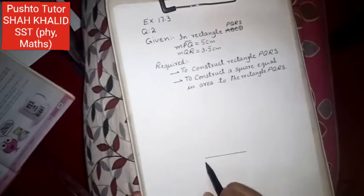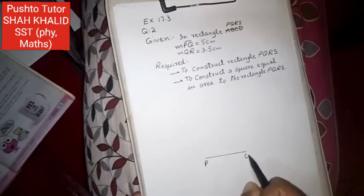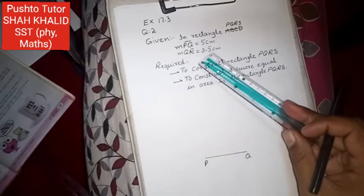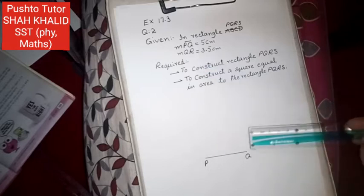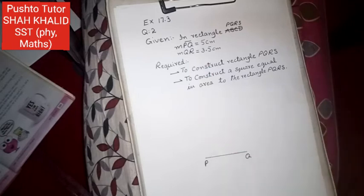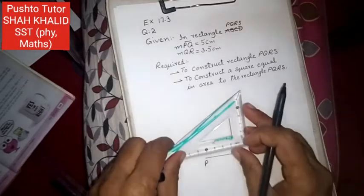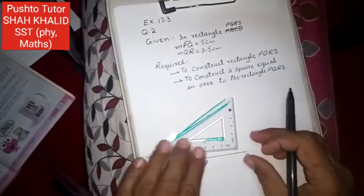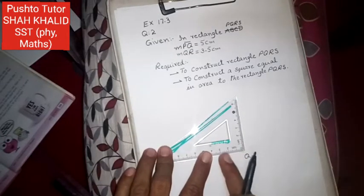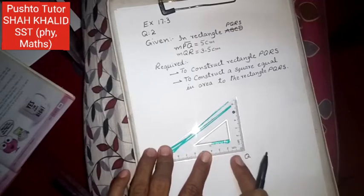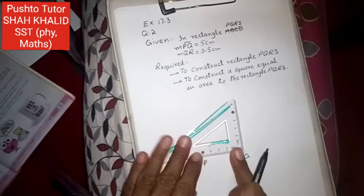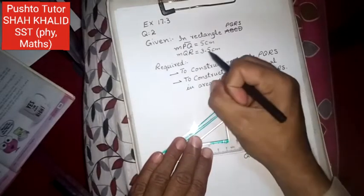Label it P and Q. Now we have one side. QR side is 3.5 cm. So at point Q, construct a right angle. At the Q side, construct a right angle, meaning perpendicular. The QR side, at the Q line segment or side, should be exactly perpendicular. And mark 3.5 cm.